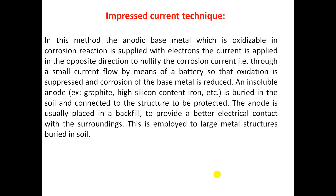The next method in cathodic protection is the impressed current technique. In this method, the base metal — which is oxidizable and prone to the corrosion reaction — is supplied with electrons. A current is applied in the opposite direction to nullify the corrosion current, through a small battery. This suppresses oxidation and reduces corrosion of the base metal. An insoluble anode is placed in the soil and connected to the structure to be protected. The anode is usually placed in a backfill to provide better electrical contact with the surrounding medium. This method is employed for larger metal structures buried in soil.